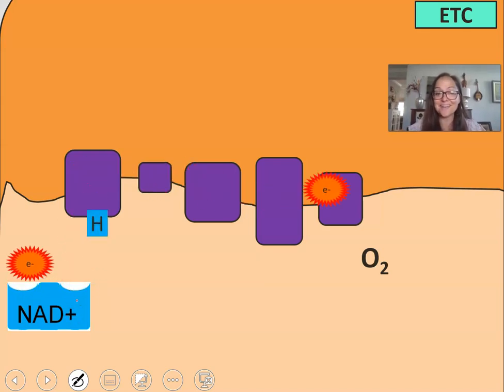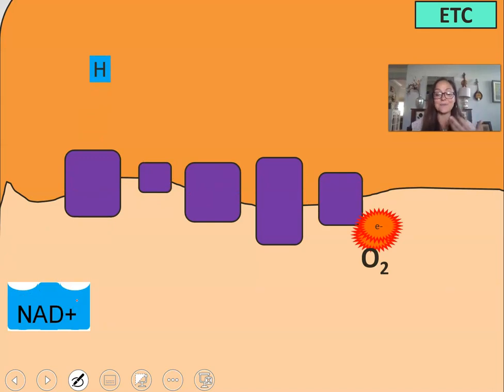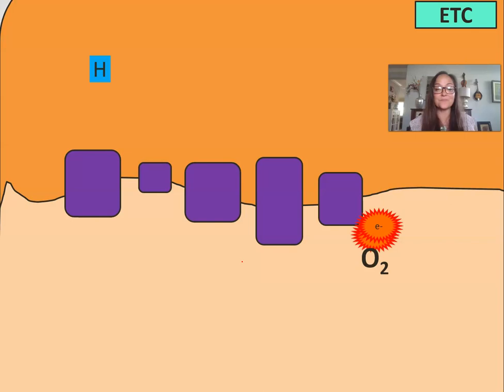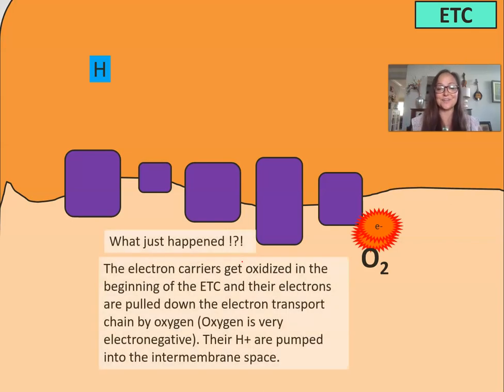Here we're going to oxidize our electron carriers, and what you notice is that the oxygen pulls those electrons down the electron transport chain while pumping that proton into the intermembrane space. A cool thing about this is that the NAD+ can now be reused again in glycolysis, the oxidation of pyruvate, or the Krebs cycle. We've basically recycled it or regenerated it.